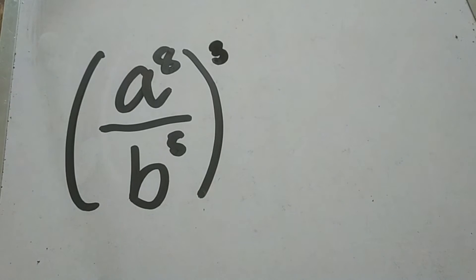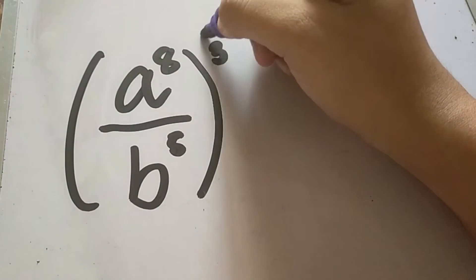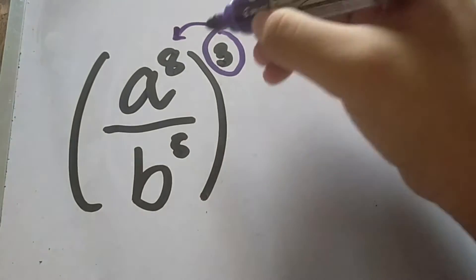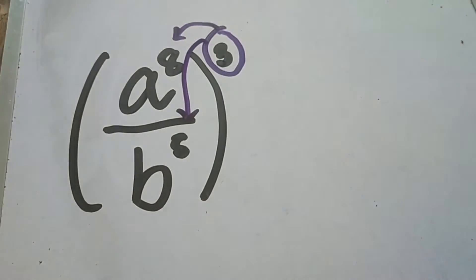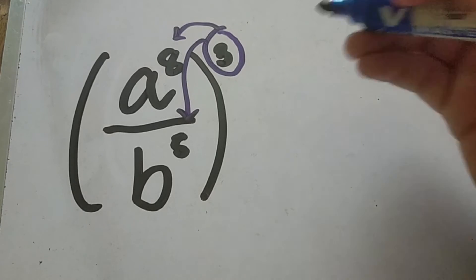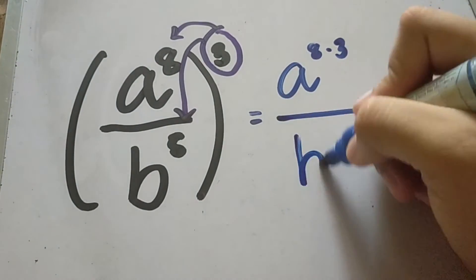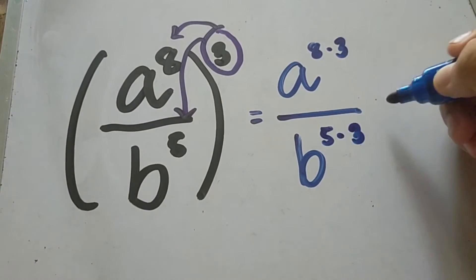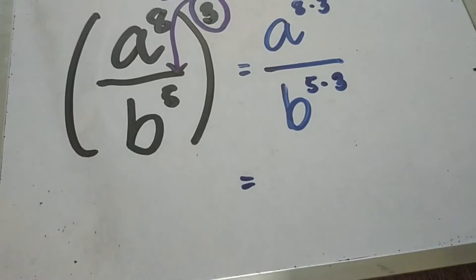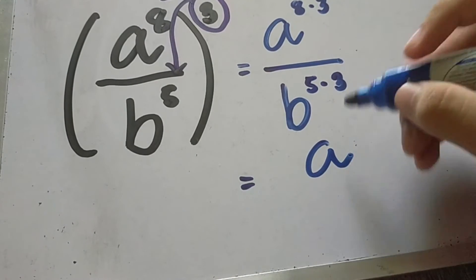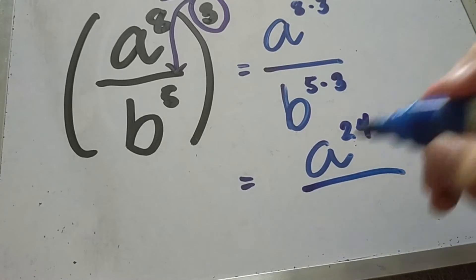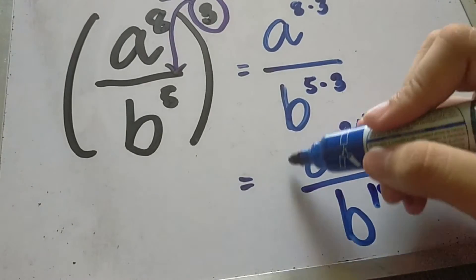Let's simplify using the power of a quotient rule. We are going to distribute 3 to each variable — both in the numerator and denominator, everything inside the grouping symbol. We copy all the bases: a raised to 8 times 3, all over b raised to 5 times 3. Our final answer will be a raised to 24 all over b raised to 15.